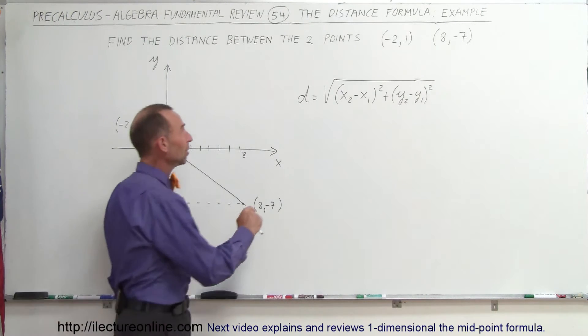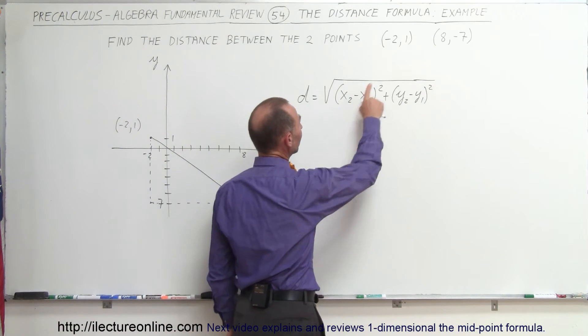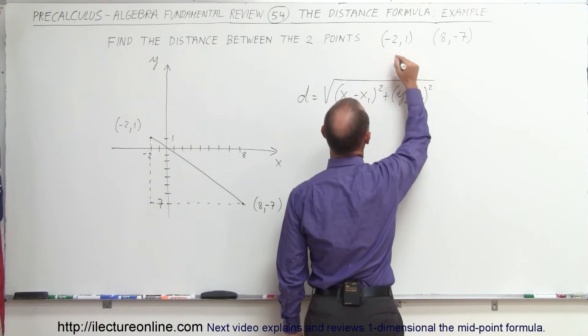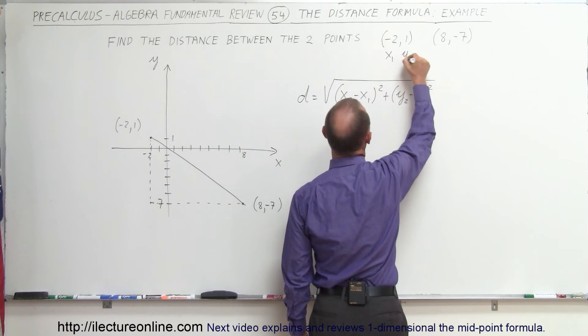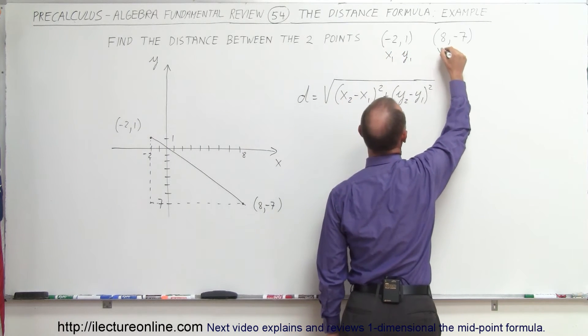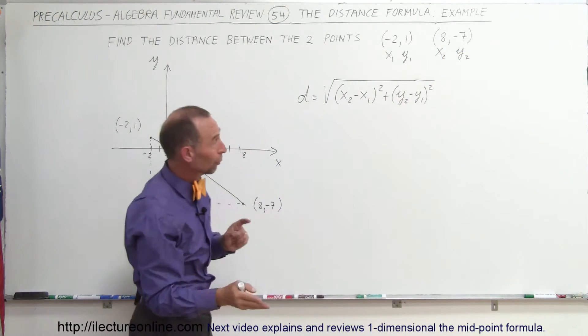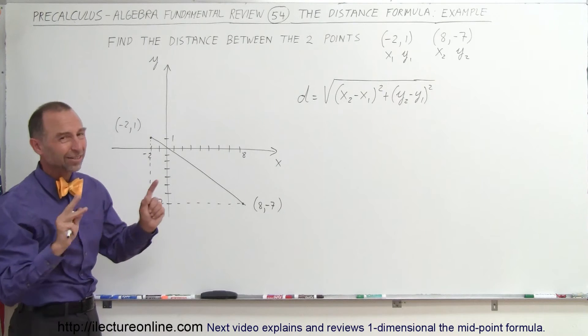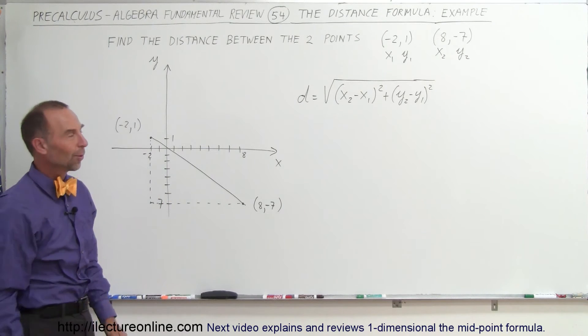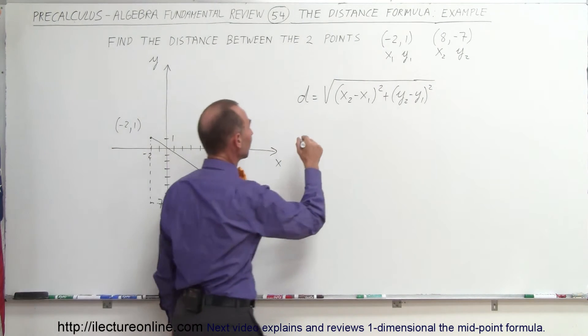So let me illustrate when we put in the values. Sometimes it helps to label these. So let's call this point 1. So this is x1, this is y1. This is point 2. Let's call it x2 and y2. And it really doesn't matter which point you call point 1 and point 2. You can reverse those. You get exactly the same result. So you can't go wrong there. So let's plug the values in now.